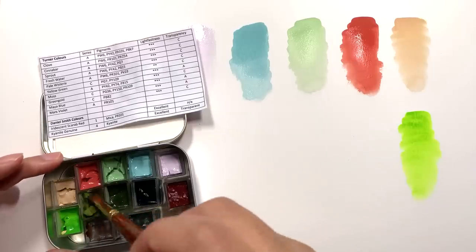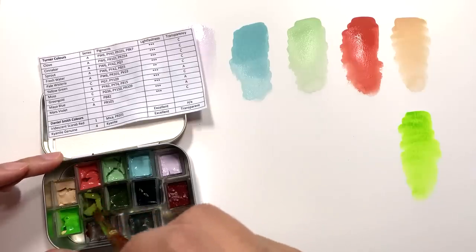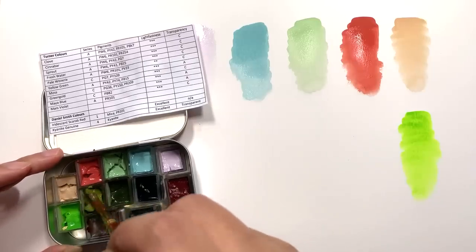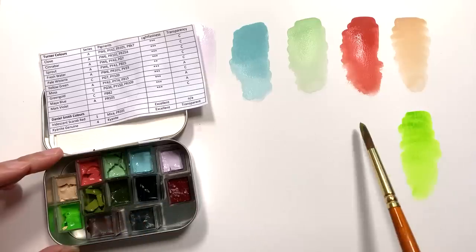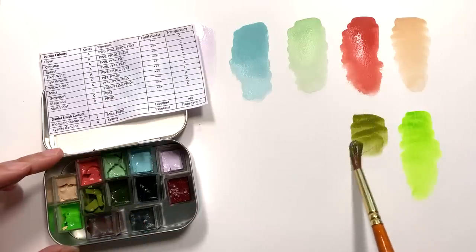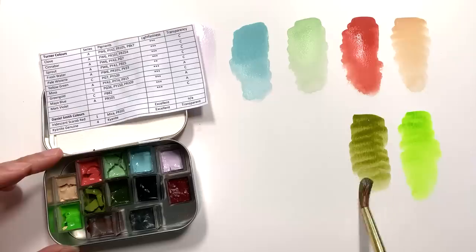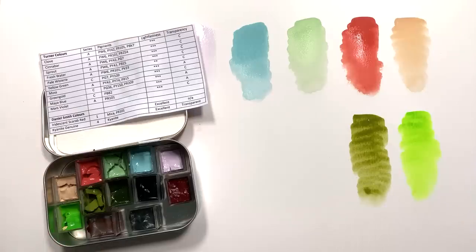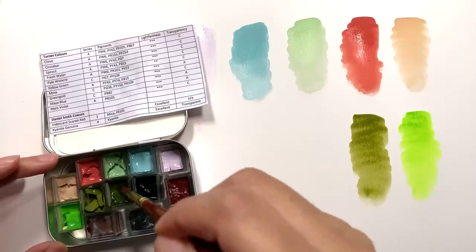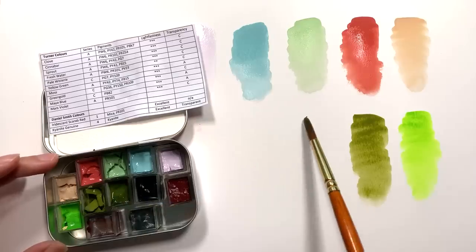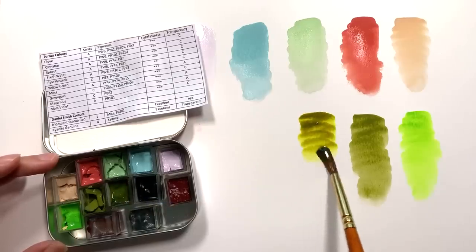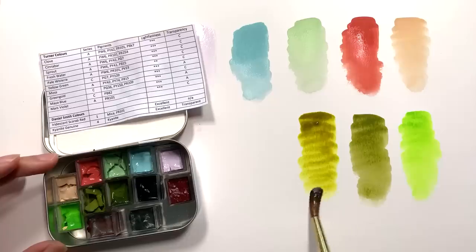Then we have moss, which has kind of decided to do a little dance in the pan. That is definitely a nice olivey moss green color. Green gold. That is a very nice green gold.